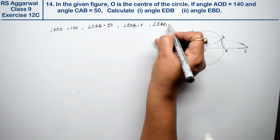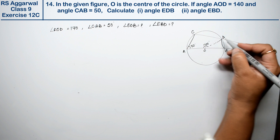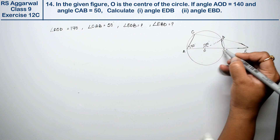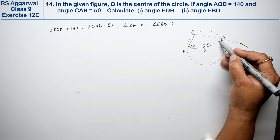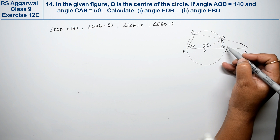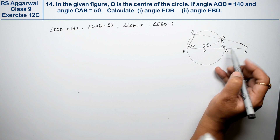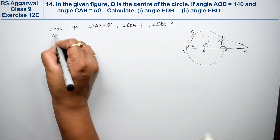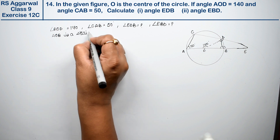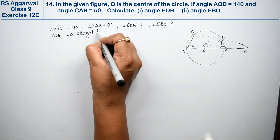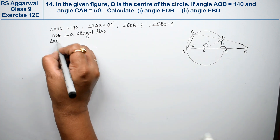We need to find angle EDB and angle EBD — these two angles. If we can find two supporting angles first, we can easily find these angles. Now, we know that AOB is a straight line.